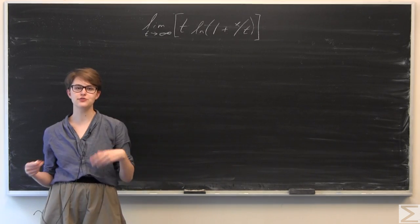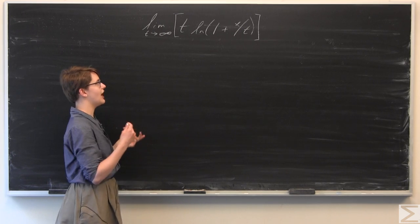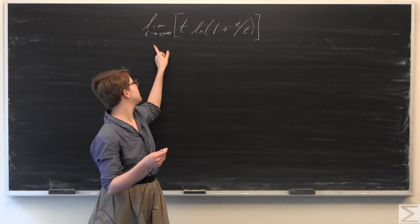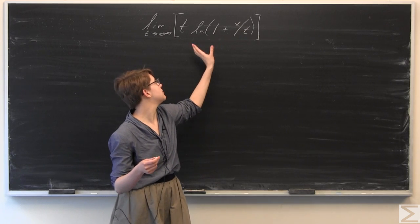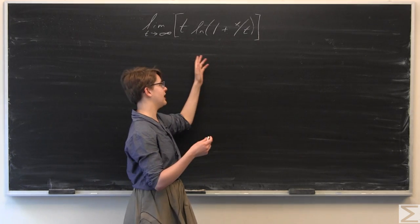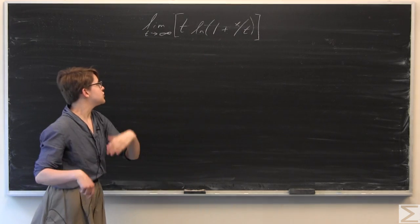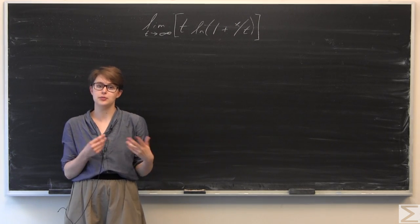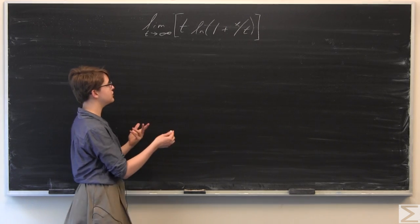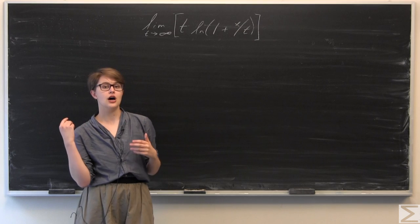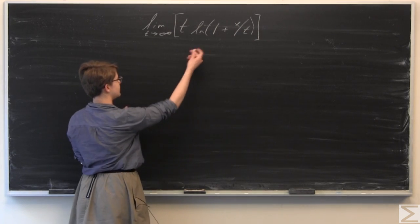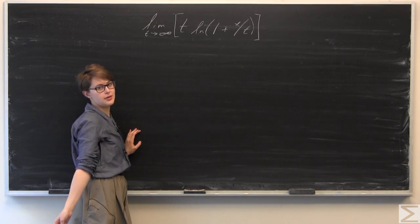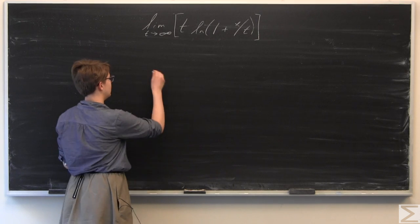If we try evaluating this right now, we're not going to get anywhere, because we're going to get infinity times 0, which is not defined. So we need to manipulate this expression such that we can evaluate the limit and have it be defined. What we're going to do to start is re-express the interior quantity that we're taking the limit of.